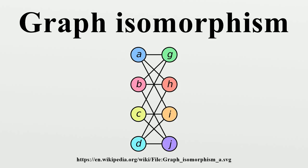The notion of graph isomorphism allows us to distinguish graph properties inherent to the structures of graphs themselves from properties associated with graph representations: graph drawings, data structures for graphs, graph labelings, etc.